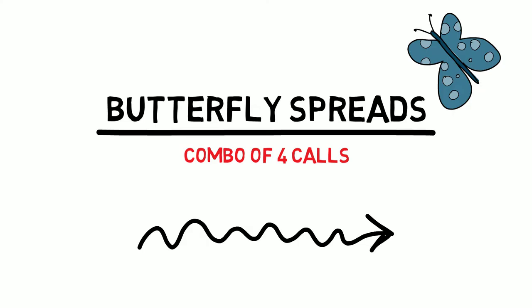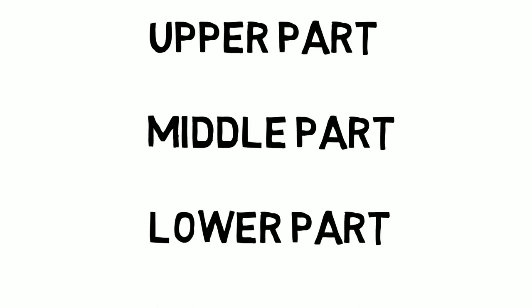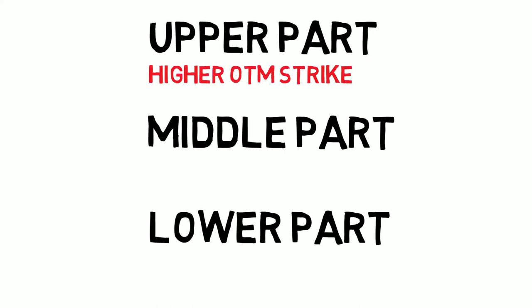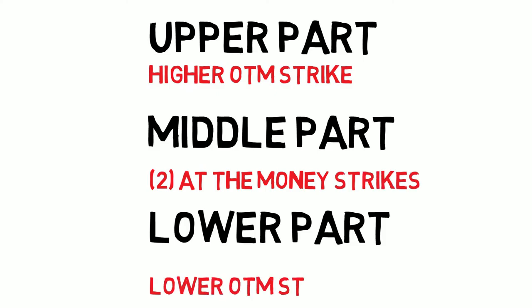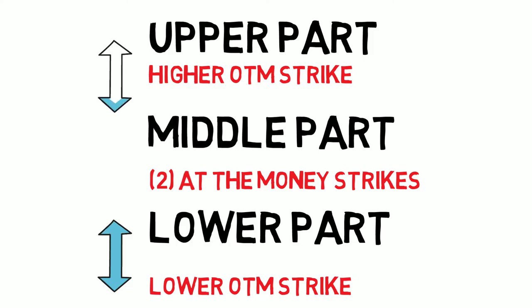The setup for this sort of play may sound complex, but once we break it down, it will all make sense. We begin with four different option contracts but three different strike prices: the first a higher strike price, the second an at-the-money strike price, and a third lower strike price. The options with the higher and lower strike prices should be the same distance from the at-the-money option.